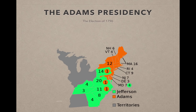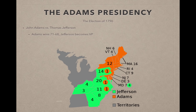Moving to John Adams, the second president — let's look at the election of 1796. Adams, a Federalist, won all of New England and the North, while Jefferson took virtually all of the South. Adams won 71 to 68. Under the original constitutional rules, Jefferson became Vice President as the runner-up. There was no mention of political parties in the Constitution, so the second-place finisher became VP.